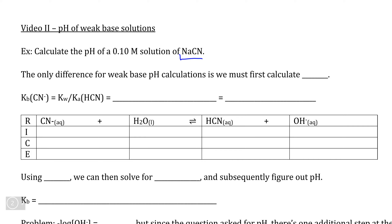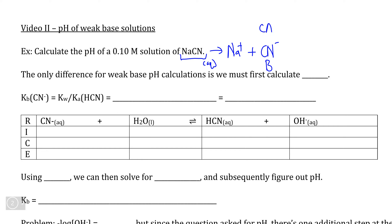If we take a look at the starting base compound, we see that it looks a little bit strange in that it's a sodium salt. If we break this down, remember that sodium compounds are completely soluble in water, which means this is going to dissociate into Na⁺ and the cyanide ion, CN⁻. If we treat this as our base, the conjugate acid of this compound is, of course, hydrogen cyanide, or HCN.